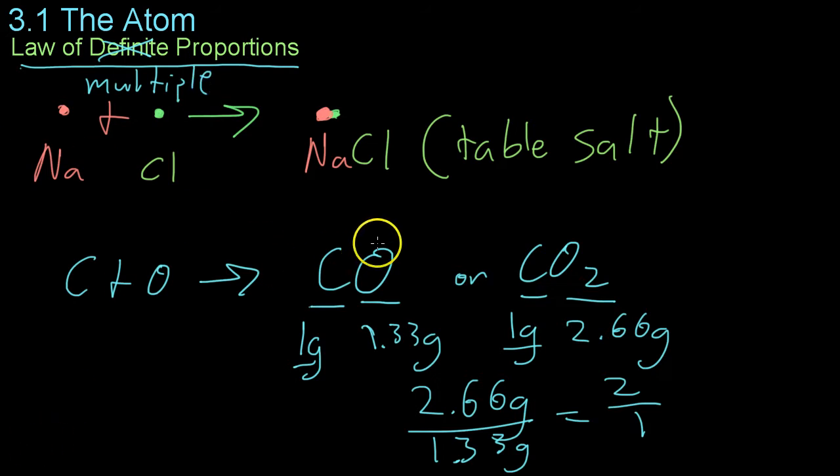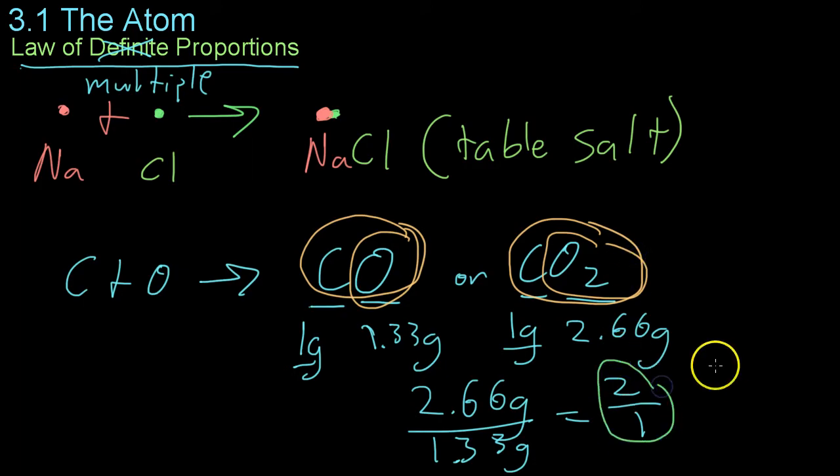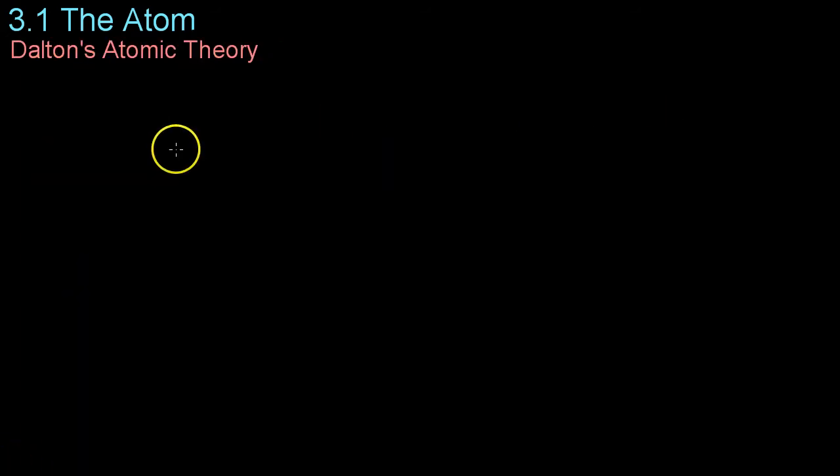This is what is known as the law of multiple proportions. If two or more compounds are composed of the same elements, in this case carbon monoxide and carbon dioxide, then the ratio of the masses of the second elements, that is, the ones that change, in this case oxygen, is always a ratio of small whole numbers. In this case 2 to 1, but it could be 3 to 2 or whatever. Based on these new-founded laws of chemistry, an English schoolteacher by the name of John Dalton proposed some assertions about atoms in the early 1800s.